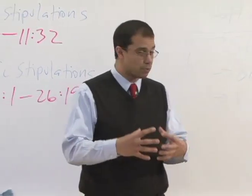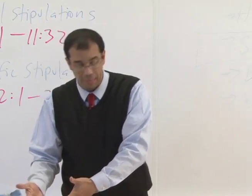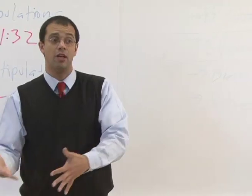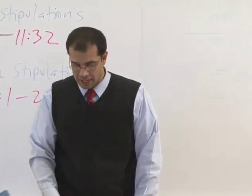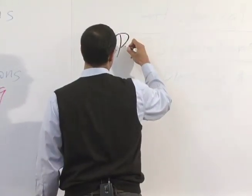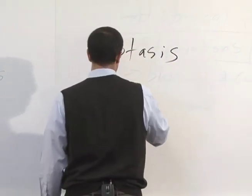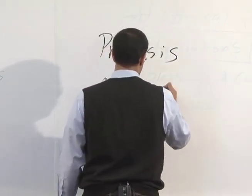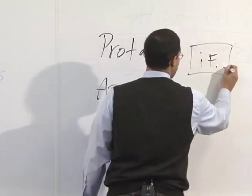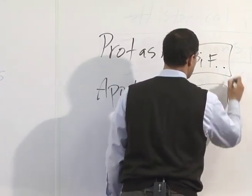The casuistic laws are case laws. They are presented in situations where if this happens, then you must do this. These are presented with a protasis, that is an introductory phrase, followed by an apodosis, the concluding phrase. If this happens, then you must do this.